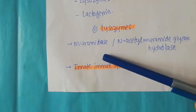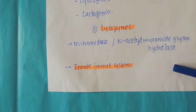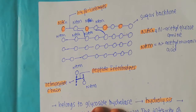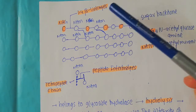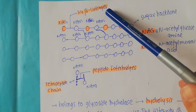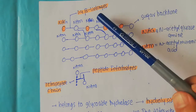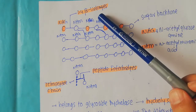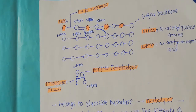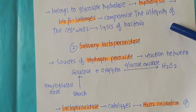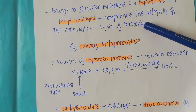Lysozymes are also known as muramidase or N-acetyl muramide glycan hydrolase and they are an important component of the immune system. What the lysozyme does is it breaks the beta-1,4 linkages present between the sugar backbone, and when they hydrolyze those beta-1,4 linkages it compromises the integrity of the cell wall, thereby causing the lysis of the bacteria.